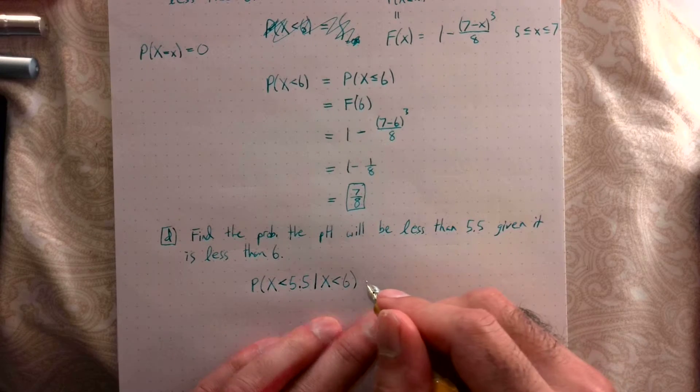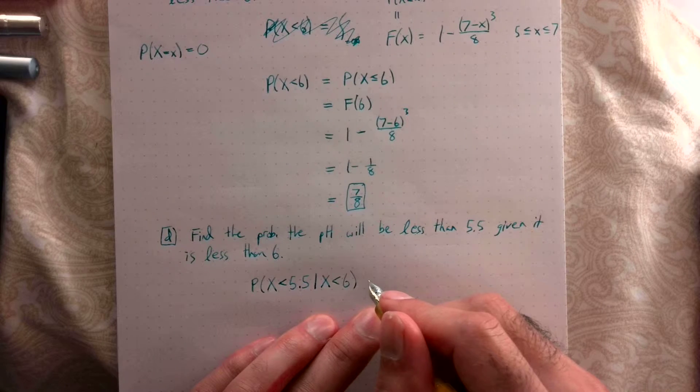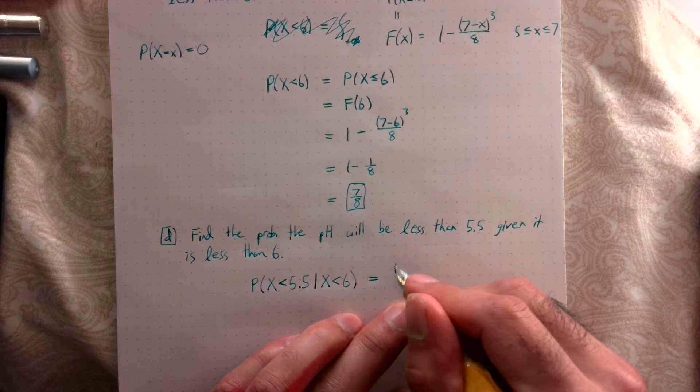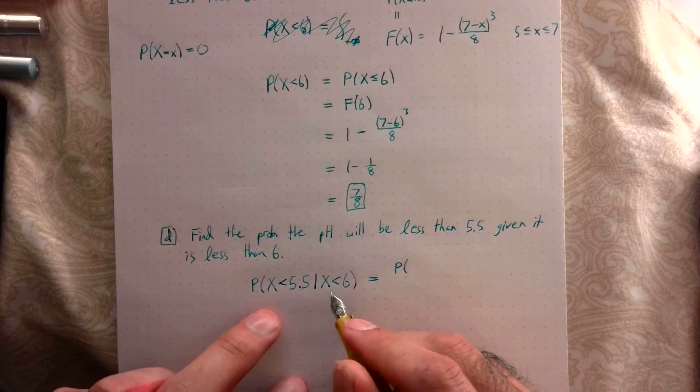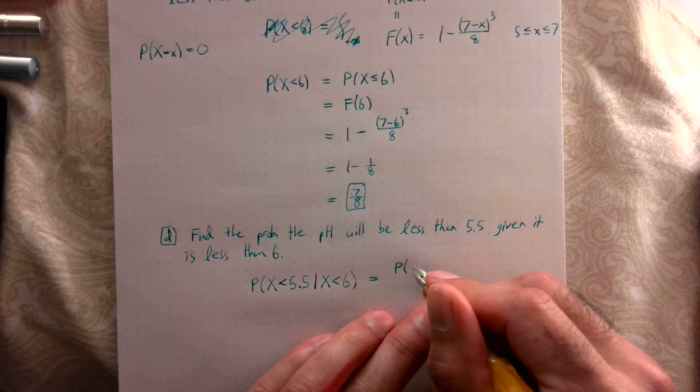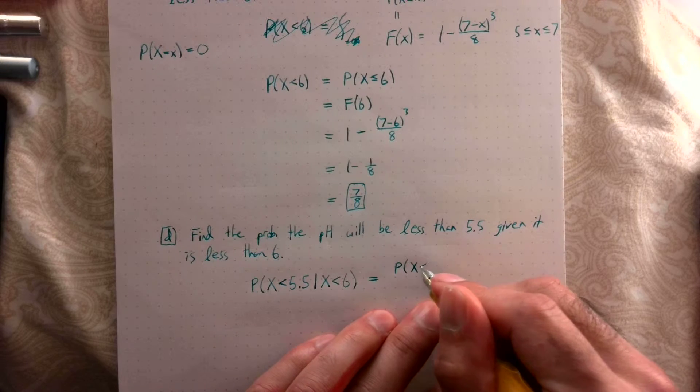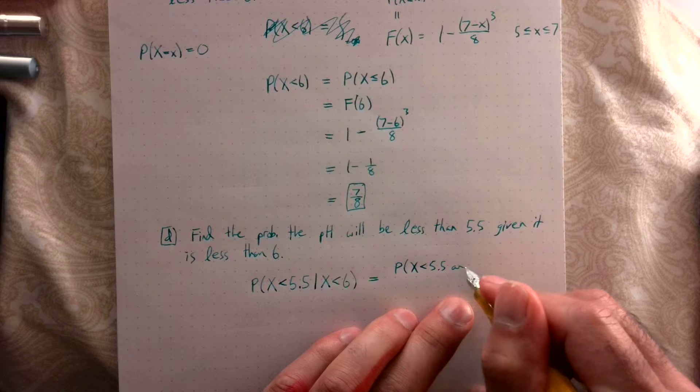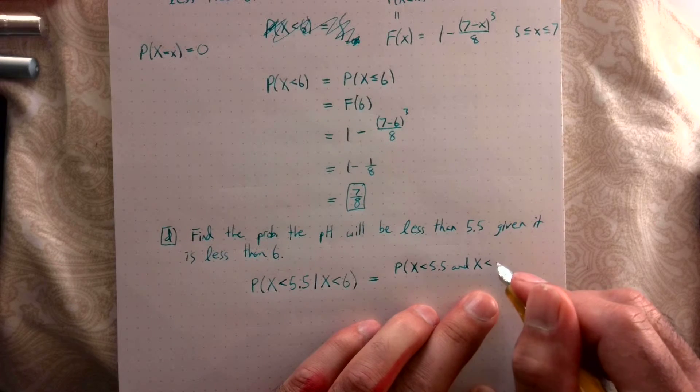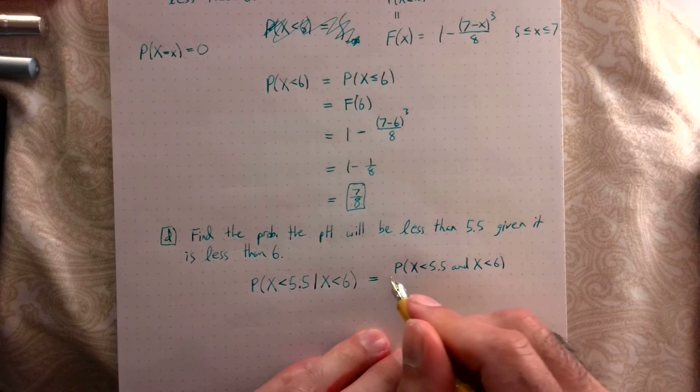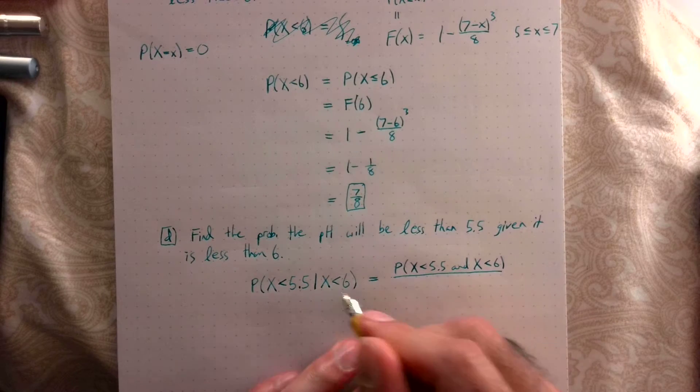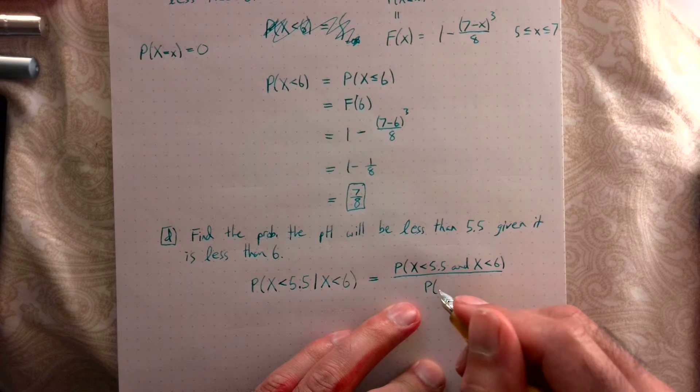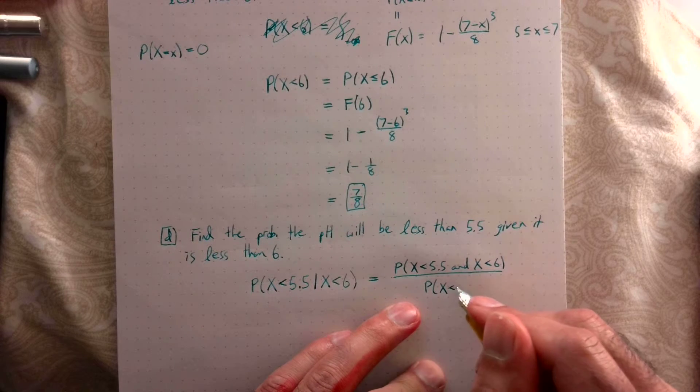What is the definition of a conditional probability? It's the probability of the intersection. So we want the probability that X is less than 5.5 and X is less than 6, over the probability that X is less than 6.